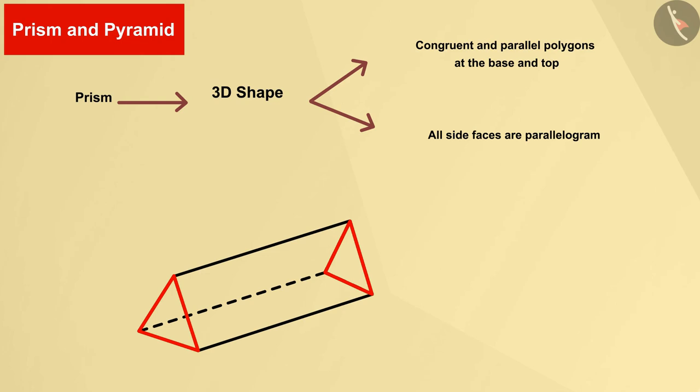Now let's give the base and top end of it a color like this. We can see that both the ends of this shape are triangles, and its three side faces are rectangular: one in front, one at back, and one down.